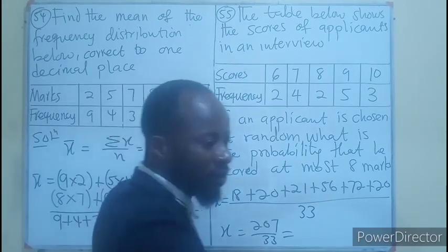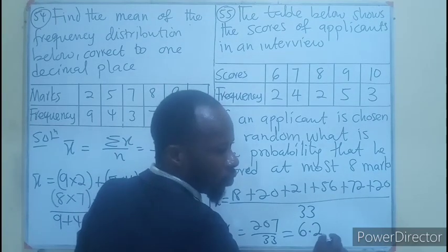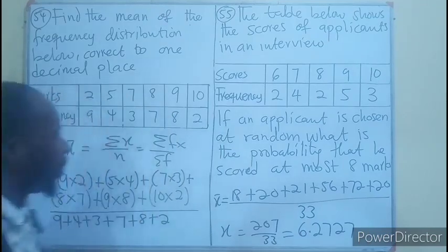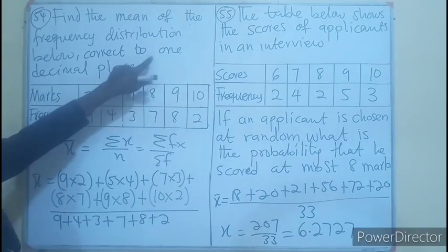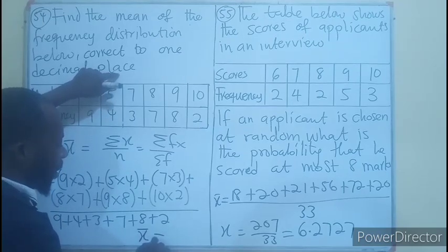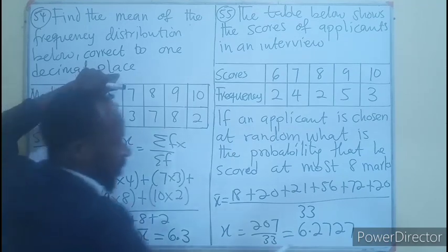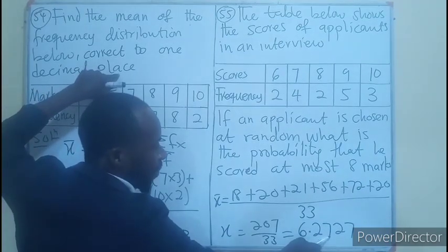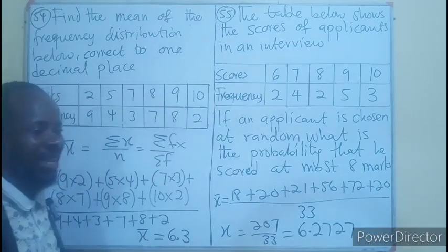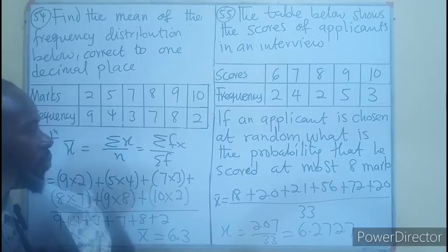And that will give us 6.2727. But we are listening to the question to one decimal place, meaning our mean will just be 6.3. This is the first decimal place. 7 is approximated as 1, added to the 2, making it 3. And that will be the option C on the question paper.